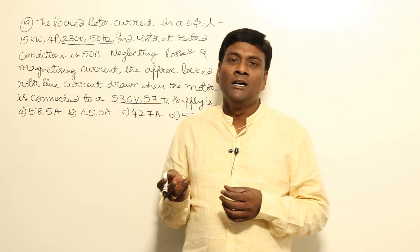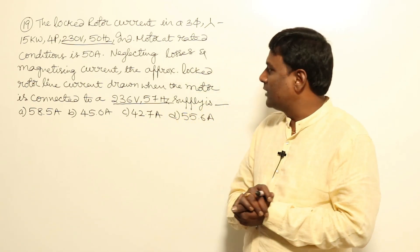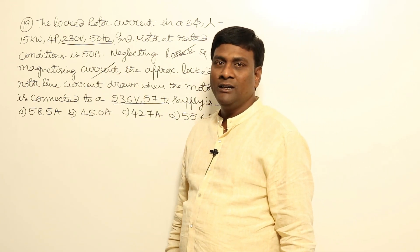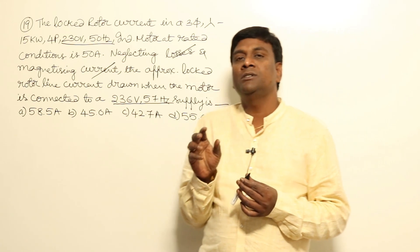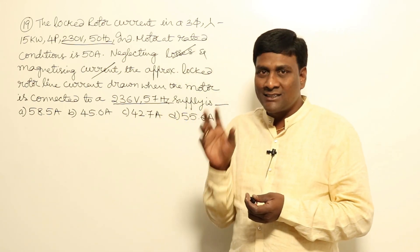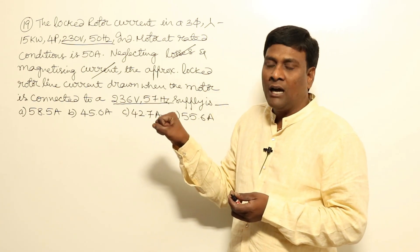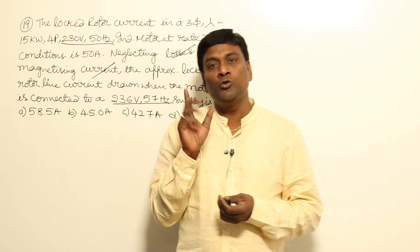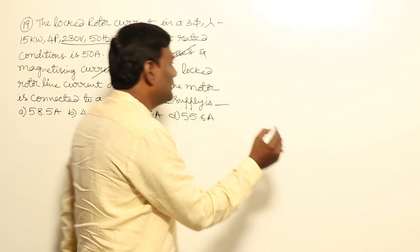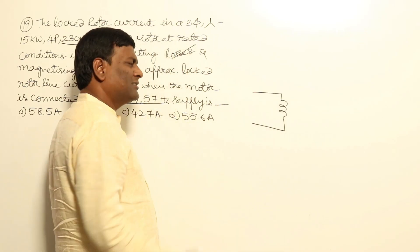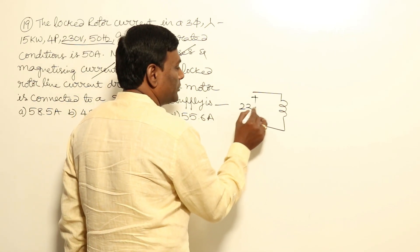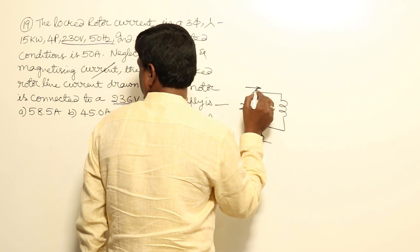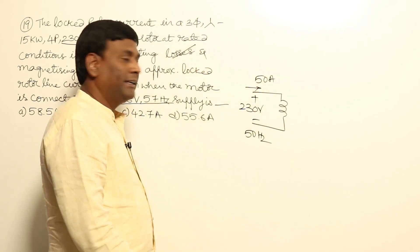Since losses and magnetizing current are neglected, the shunt branch is removed. At starting (locked rotor), slip = 1, which is the high-slip region. Here R2 dash / S is small compared to X2 dash, so only reactance X2 is considered — the circuit behaves as a purely reactive branch. At 230 V, 50 Hz, the locked rotor current is 50 amperes.